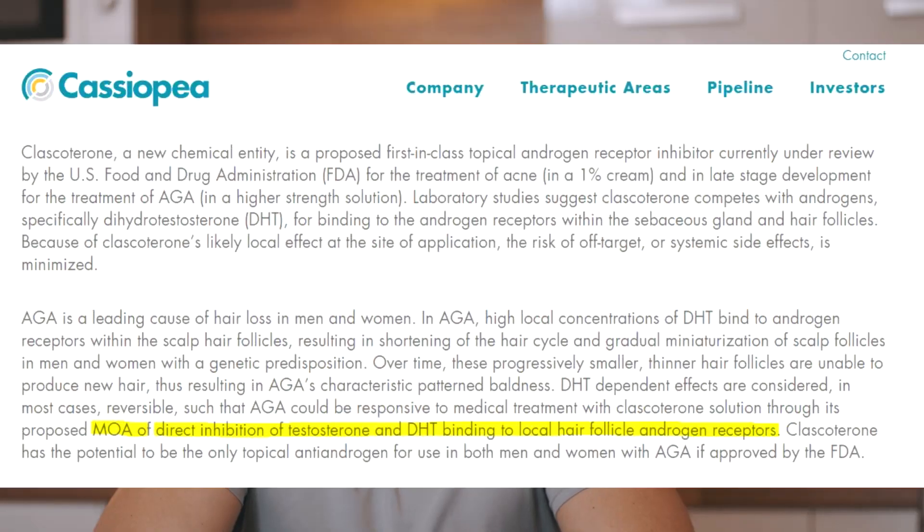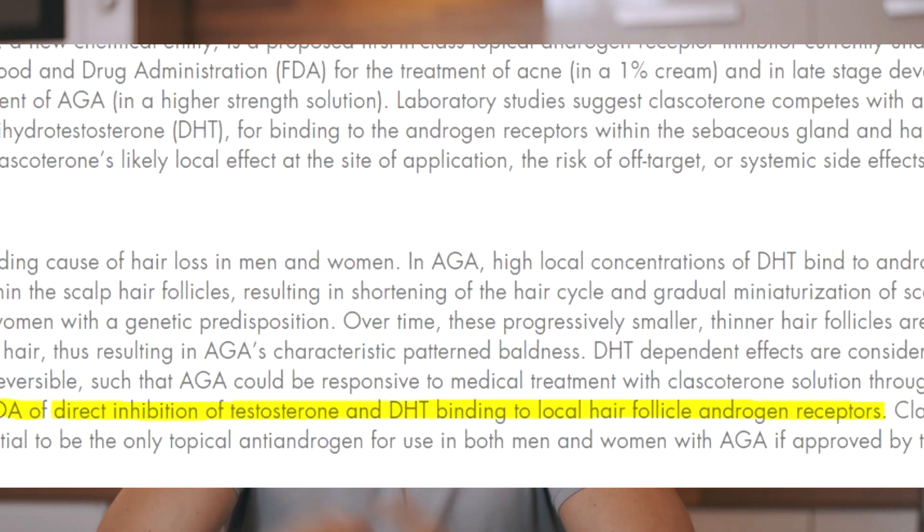The mechanism of action of topical clascoterone CB0301 has been described by Cassiopeia as direct inhibition of testosterone and DHT binding to local hair follicle androgen receptors — basically the same as RU58841. Maybe CB0301 will be better than RU, maybe not. Since there are no clinically conducted randomized controlled trials on RU's efficacy for terminal hair growth, hair shaft elongation, or hair diameter improvements, we can't say for now. RU's research was interrupted in the 1990s by a company called Prostrakan, with rumors that initial trials showed similar or even better efficacy than Finasteride.